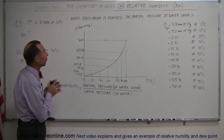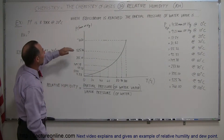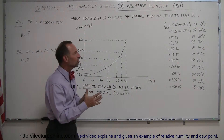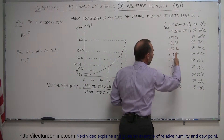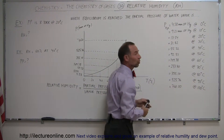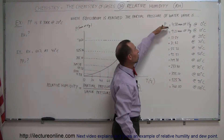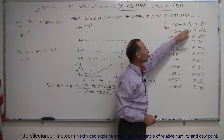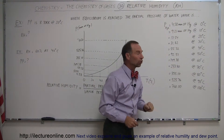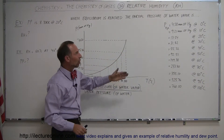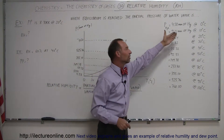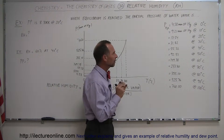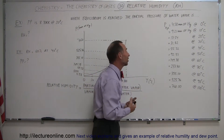We go back to what we understand about vapor pressure. When equilibrium is reached — meaning when the maximum amount of moisture the air can hold is reached at various temperatures — the partial pressure of water will increase with increasing temperatures. At colder temperatures the air cannot hold as much water, so the maximum partial pressure is much smaller at lower temperatures and becomes much larger at higher temperatures. These are the maximum partial pressures achievable at various temperatures — the point at which the air can hold as much water as it can hold.